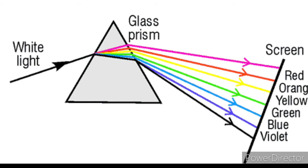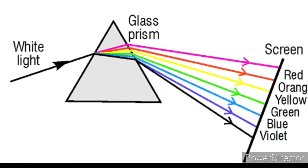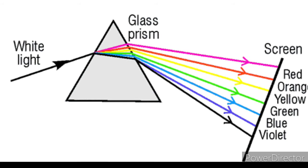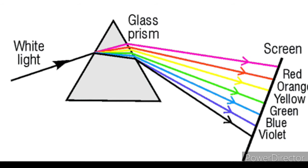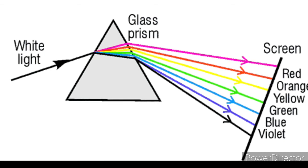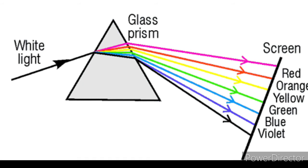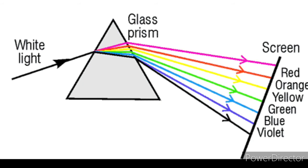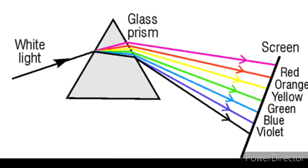Do you know the three basic or primary colors for painting? By mixing them you can make different shades. The three primary colors of painting are magenta, yellow, and cyan. When you mix all of them, the result is black. Similarly, the three primary colors of light are red, blue, and green — on mixing they form white.